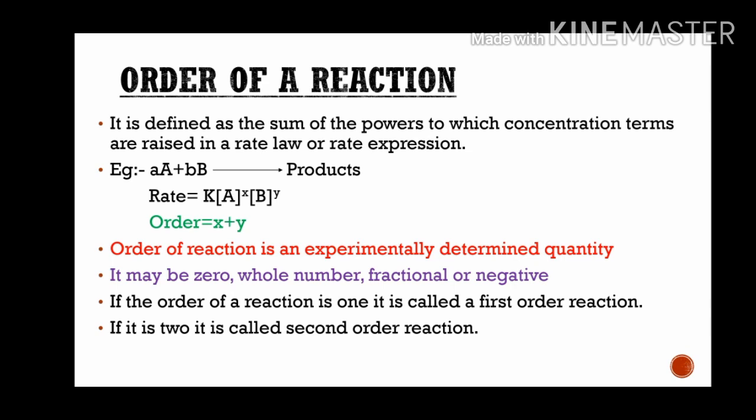The order of a reaction is an experimentally determined quantity. If we have a chemical equation, we can predict the order of that reaction. The rate expression contains concentration terms, and the sum of the powers x plus y gives us the overall order of the reaction.